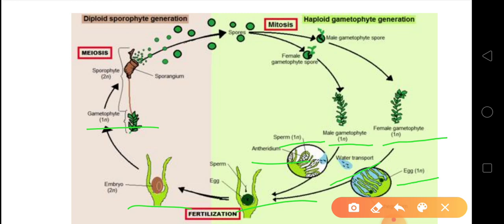Always remember: the gametophyte is on the downside and the sporophyte is on the upside — the sporophyte lies on the gametophyte. The gametophyte converts into the sporophyte that has 2N, and in the sporophyte the spores are present. These spores are divided by the process of meiosis to form four haploid spores. The spores are made from the sporophyte and these spores again convert into the male and female gametophyte. This is the life cycle of bryophytes.